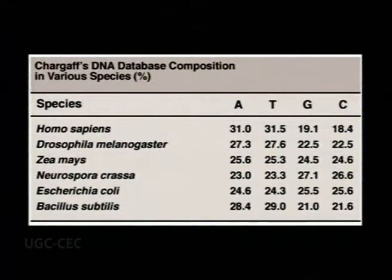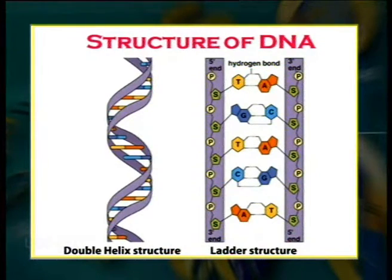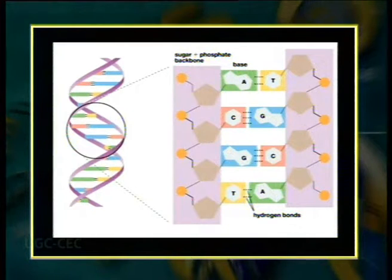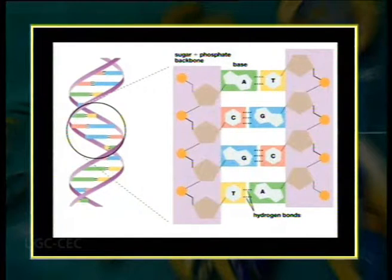Thus, the composition of any DNA can be described by the proportion of its G+C content, which ranges from 26% to 74% for different species. The double helix model proposed by Watson and Crick consists of two helical DNA chains coiled around the same axis to form a right-handed duplex. The hydrophilic backbone of alternating deoxyribose and negatively charged phosphate groups is on the outer side of the double helix, facing the surrounding water. The purine and pyrimidine bases of both strands are stacked inside the double helix, with their hydrophobic and nearly planar ring structures very close together and perpendicular to the long axis of the helix.